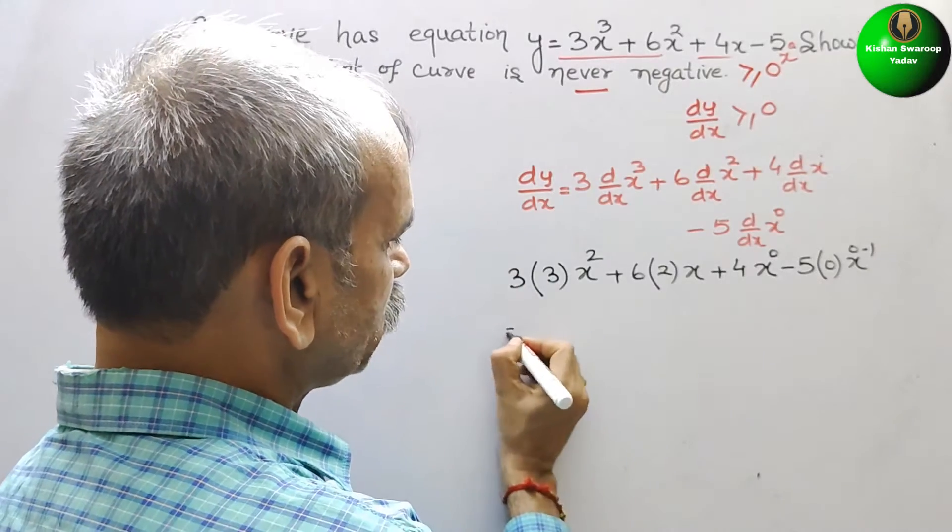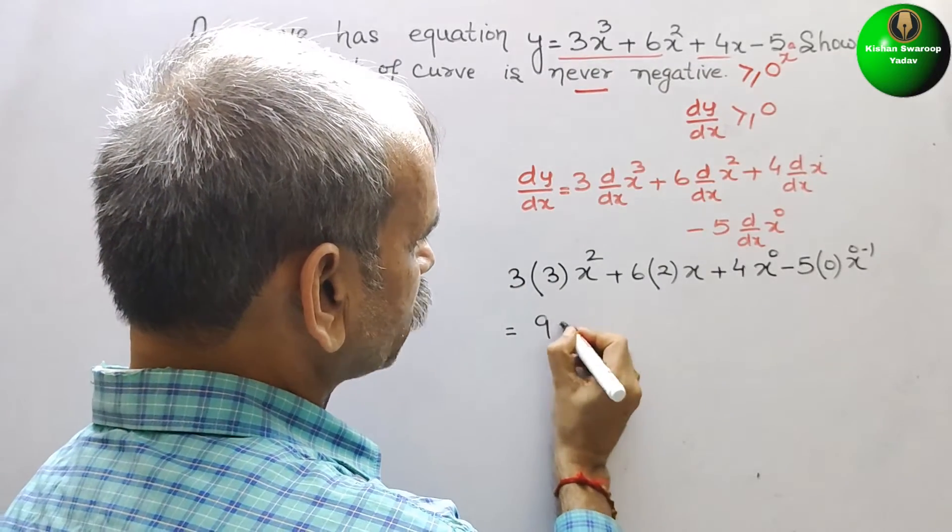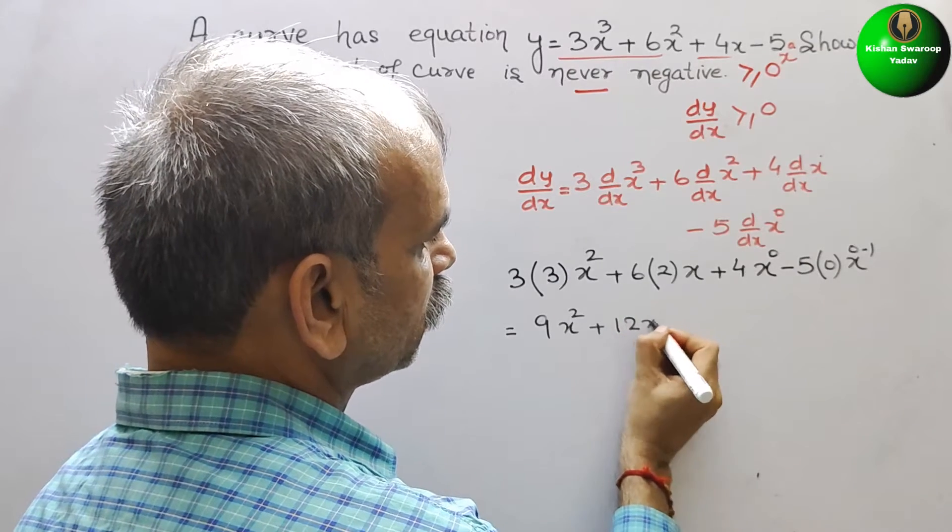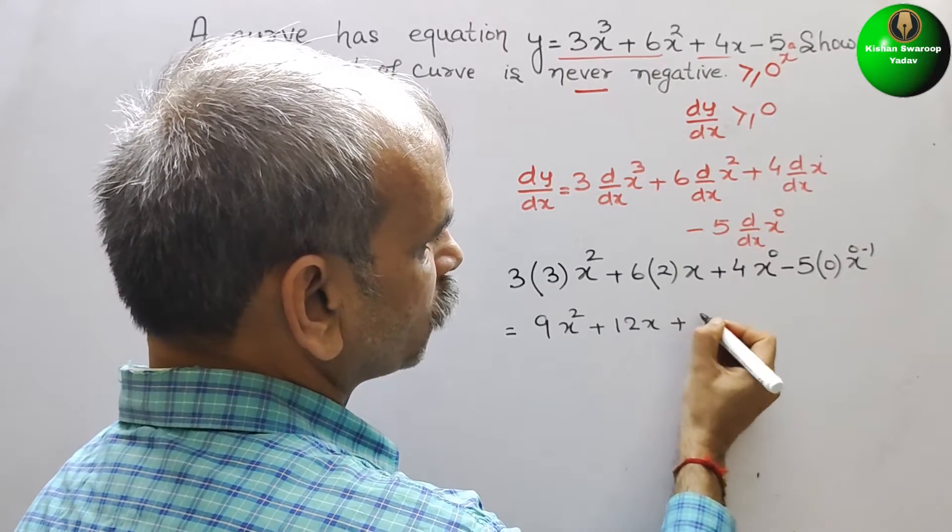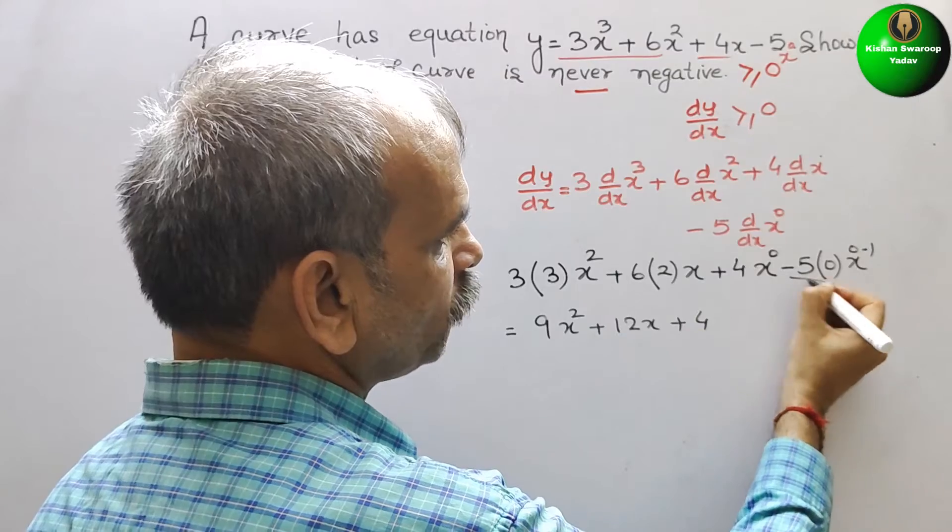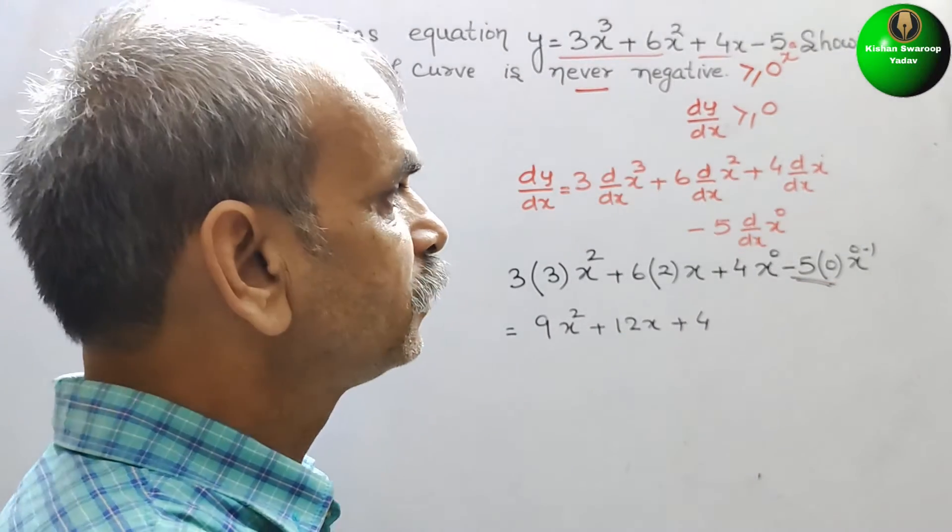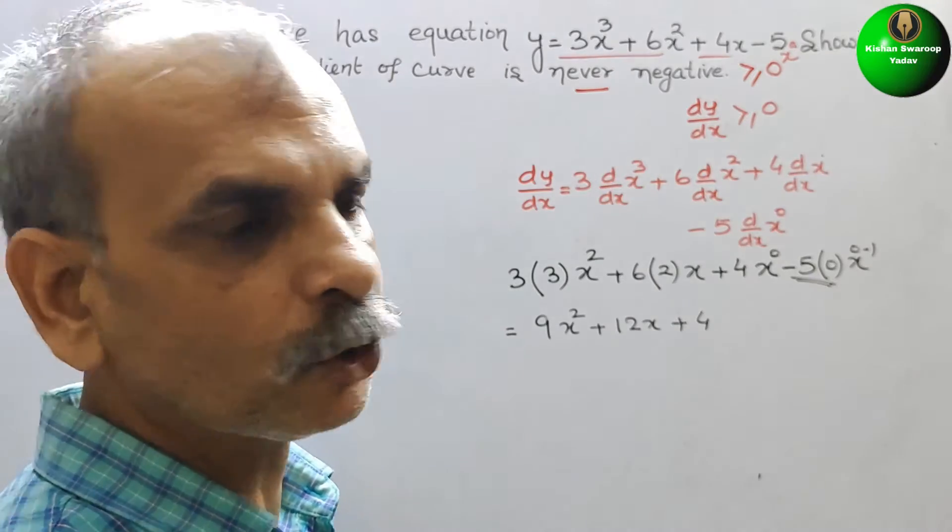So that means this is 9x² + 12x + 4, and this will be 0. So now we will take it as it should be greater than or equal to 0.